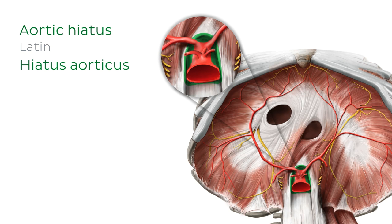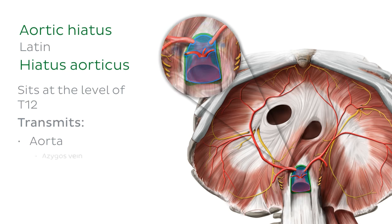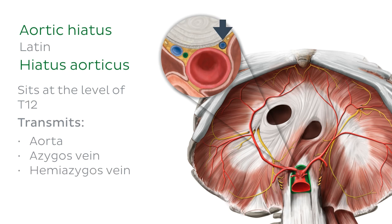The aortic hiatus sits at the level of T12 and transmits the aorta, the azygous vein, the hemi-azygous vein, and the thoracic duct.